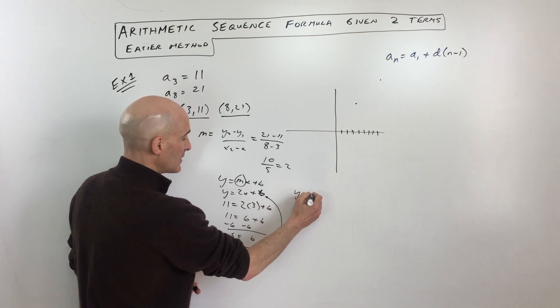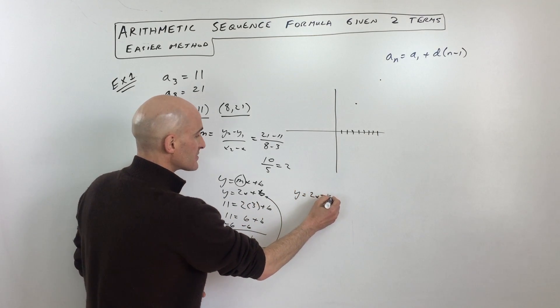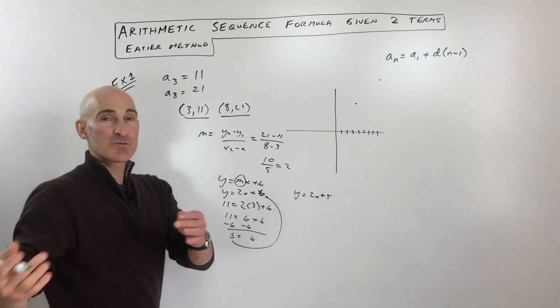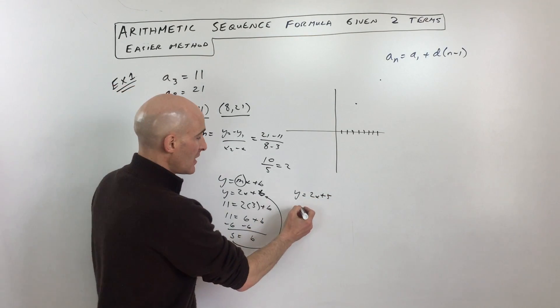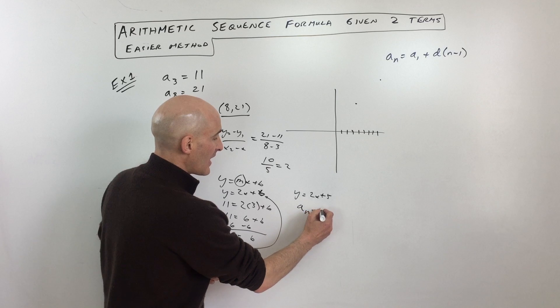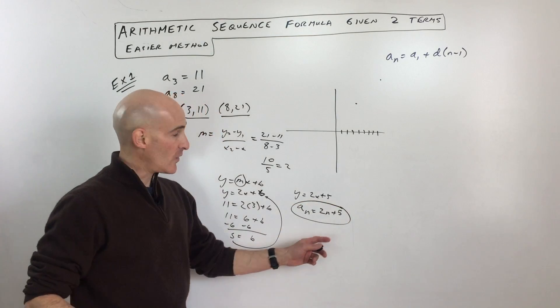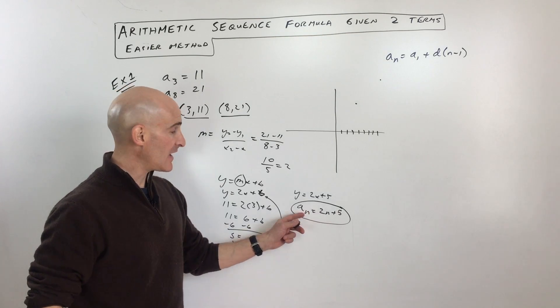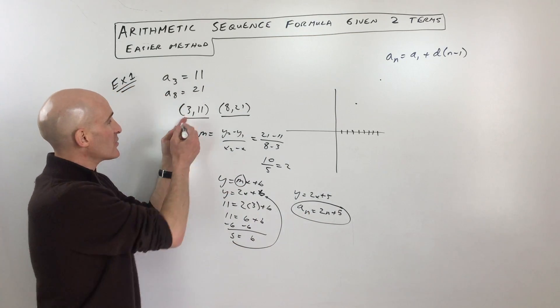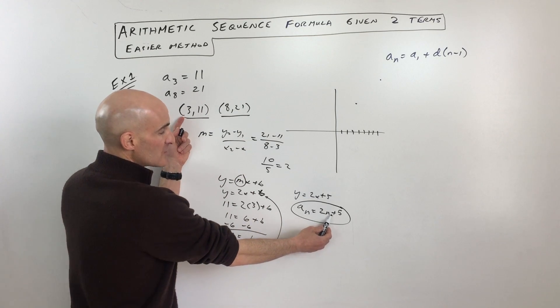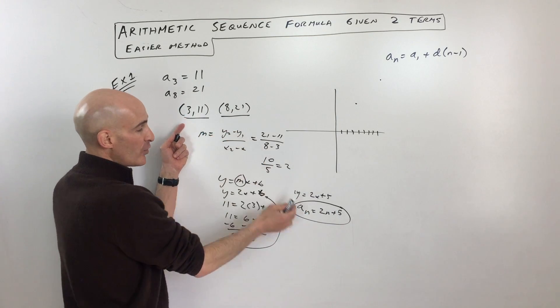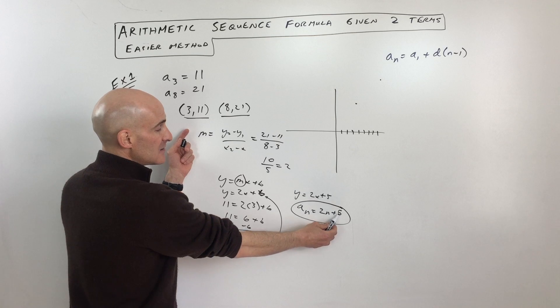Now let's switch back to the sequence notation, which is going to look like this: a sub n equals 2 times n plus 5. n is what term you're on and a sub n is the value of that term. You can test it out. If I put 3 in, that's going to be 2 times 3 is 6 plus 5 is 11. If we put 8 in, we get 2 times 8 is 16 plus 5 is 21, and you can see that it checks out.